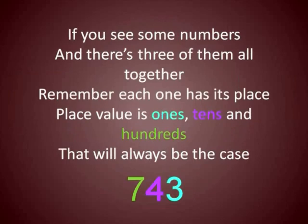If you see some numbers, and there's three of them all together, remember each one has its place. Place value is ones, tens, and hundreds. That will always be the case.